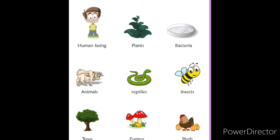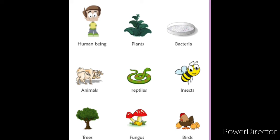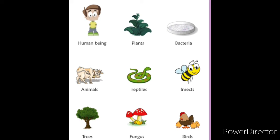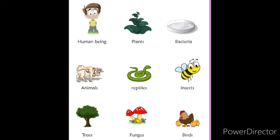Living things need air, water, food, and shelter to survive. All living things are born, breathe, eat, grow, move, and reproduce, and have senses. That's all for today, children. Thank you.